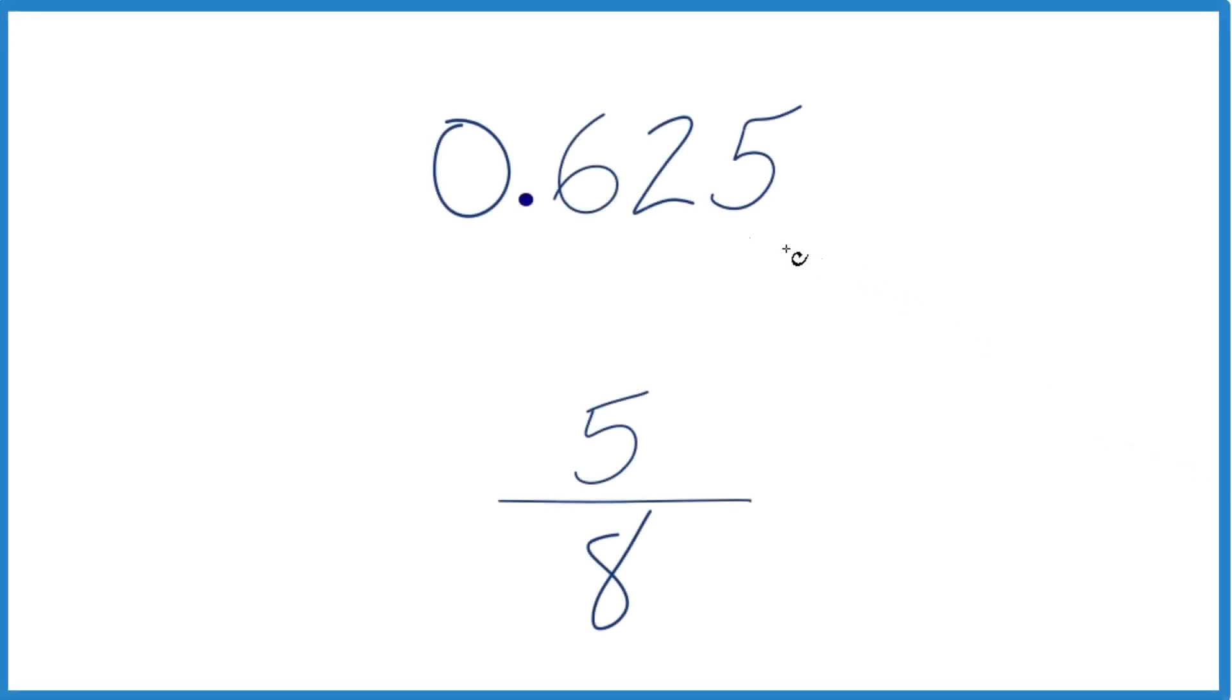So how do you tell which is larger? 0.625 here or 5 eighths? So we have a decimal and we have a fraction. We want to figure out which one is larger.